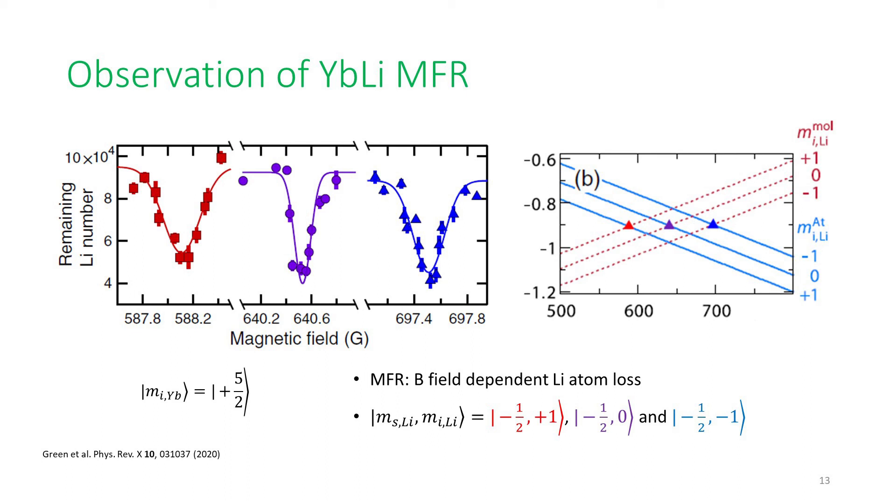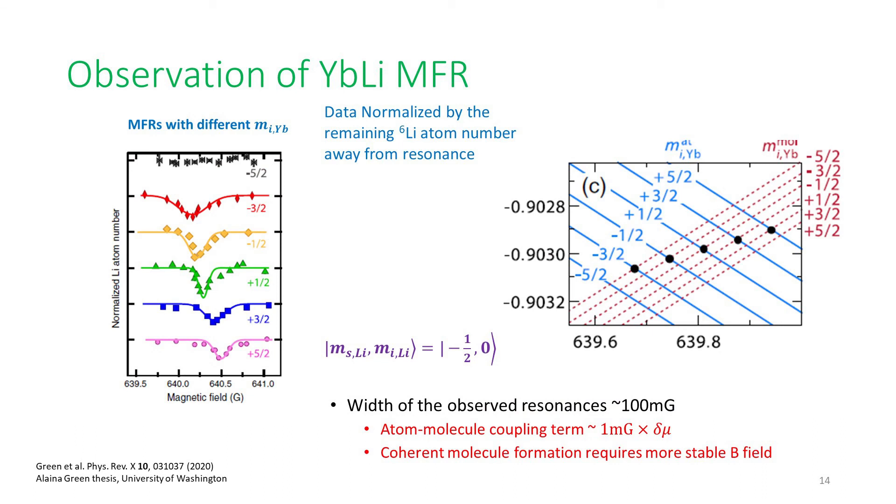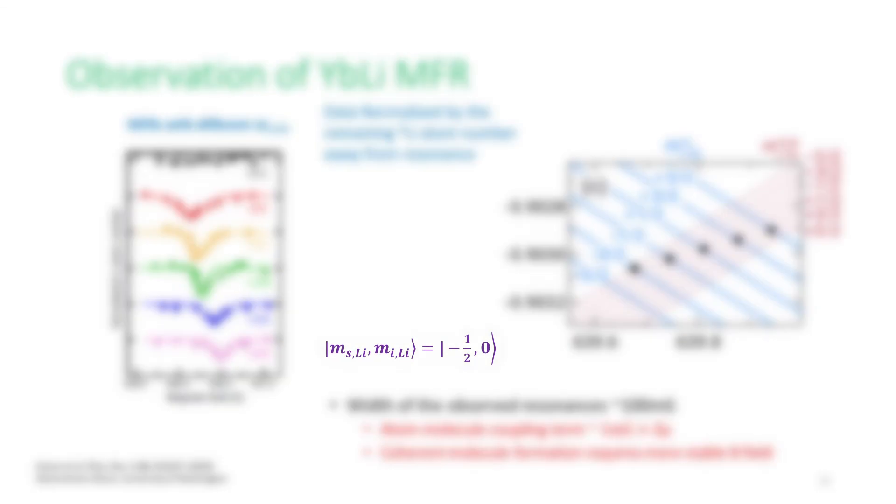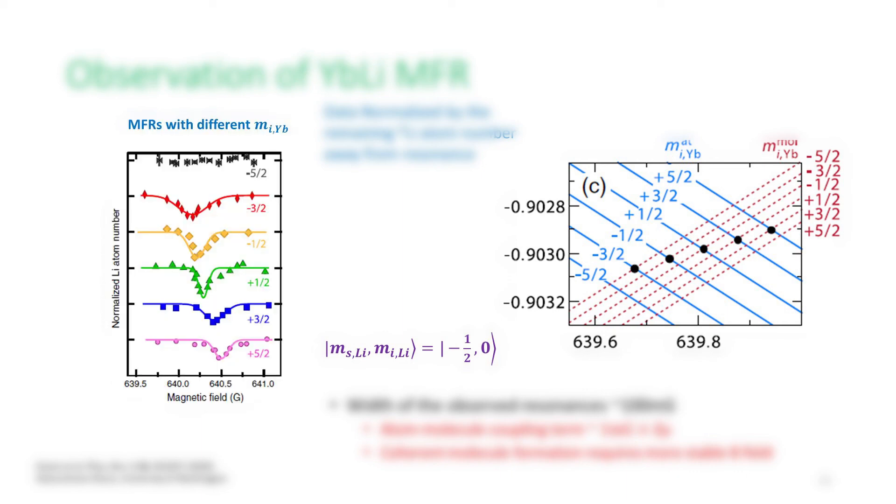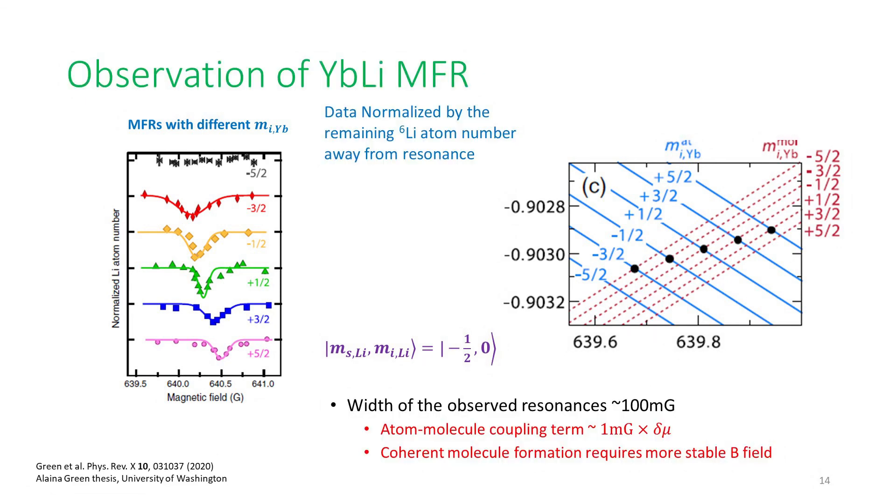Now, as I mentioned before, if we zoom in on the purple resonance, we'll be able to resolve even finer details as shown in this slide here. Here, in the free atomic channel, the lithium atoms are spin-polarized to state 2, with ms equals minus one-half and mi equals zero. As a recap, again, when we have a much finer control over the magnetic fields, we can resolve five different resonances corresponding to different mi's of ytterbium, as shown on the right here. And indeed, we have observed the same in our data on the left here. The widths of these resonances are quite narrow, about 100 milligauss. And as per our calculations, detailed in the recent doctoral thesis from our group, the atom-molecule coupling term turns out to be about 1 milligauss times delta mu, where delta mu is the difference in magnetic moments between the two channels. Therefore, a coherent molecule formation is going to require an even more stable magnetic field than what we have here.